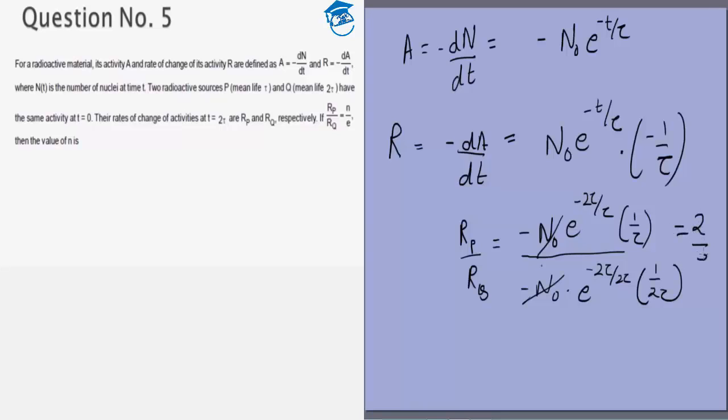We get this equals 2 by e. We are given this equals n by e, so from that we get n equals 2. Thank you.